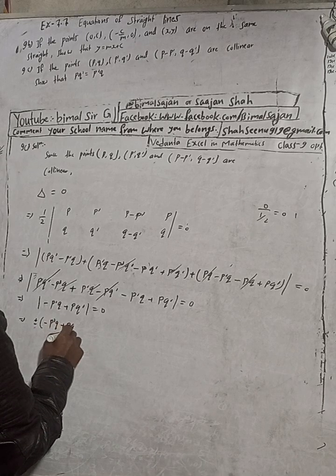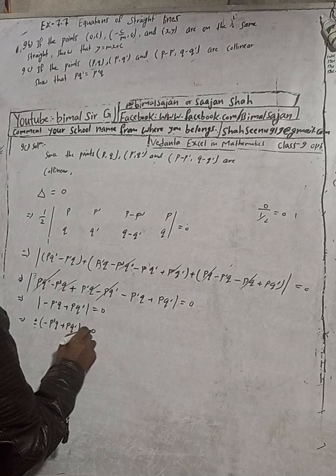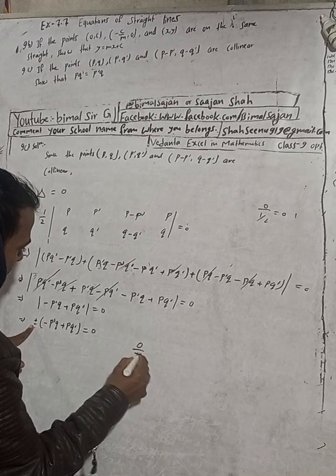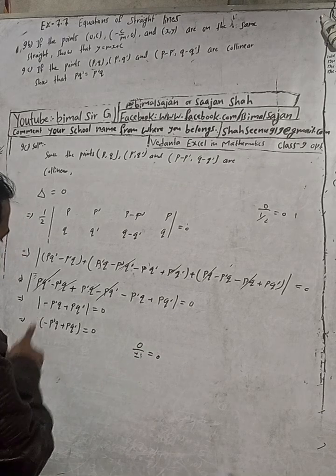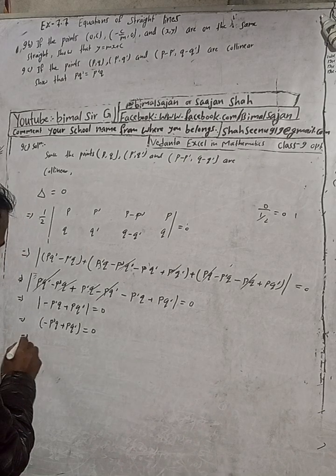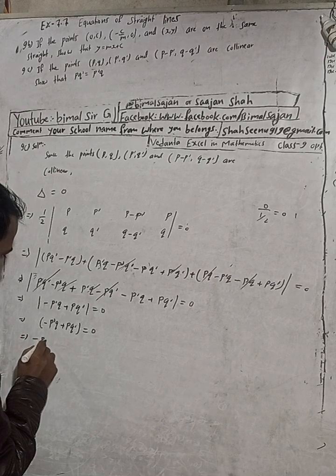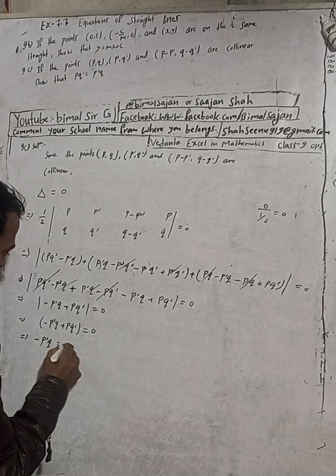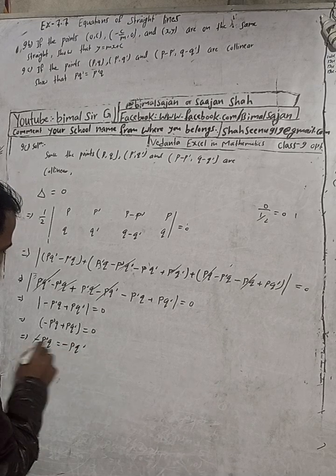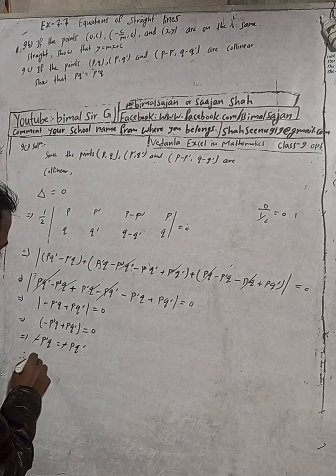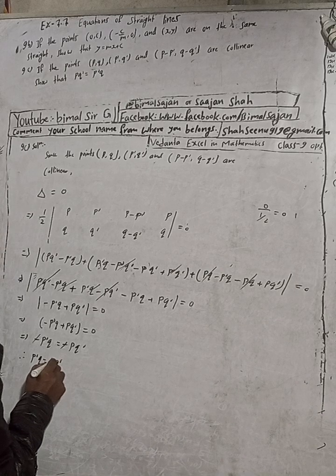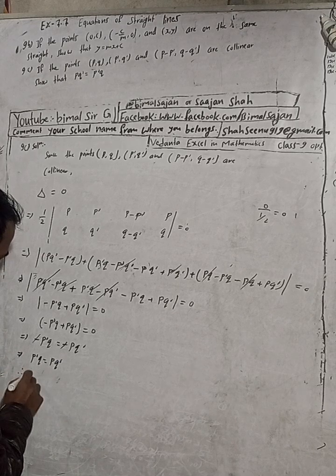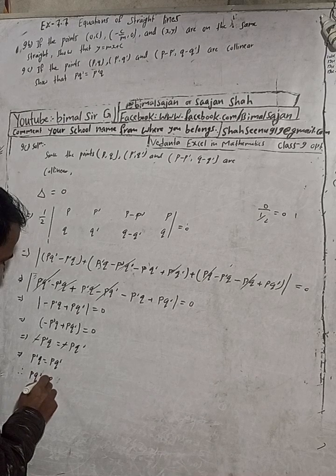When I take this plus or minus equal to zero, for this to equal zero: minus PQ equals minus PQ', so minus and minus cancel. Therefore, P'Q is equal to PQ'. That is, PQ' is equal to P'Q.